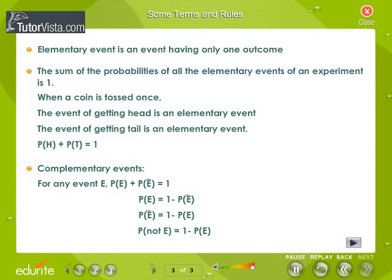Some Terms and Rules: Elementary Event - an event having only one outcome is called an elementary event. When a coin is tossed once, the event of getting head is an elementary event and the event of getting a tail is an elementary event. The sum of the probabilities of all the elementary events of an experiment is 1.